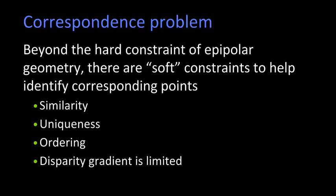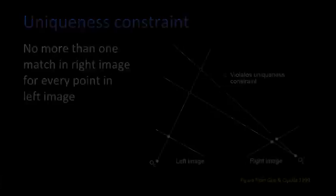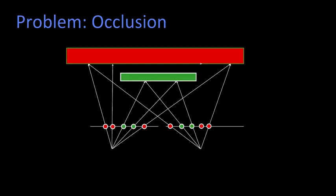I want to talk just a little bit about two of these other constraints that we talked about for the correspondence problem. One is uniqueness, and the other is ordering. So uniqueness says that there's no more than one match in the right image for every point in the left, and vice versa. So why does it say no more than one? Shouldn't it be exactly one? The problem is occlusion, and that's illustrated here.